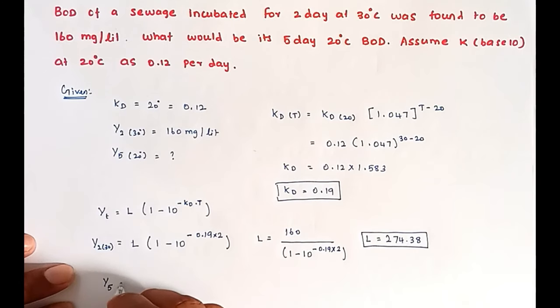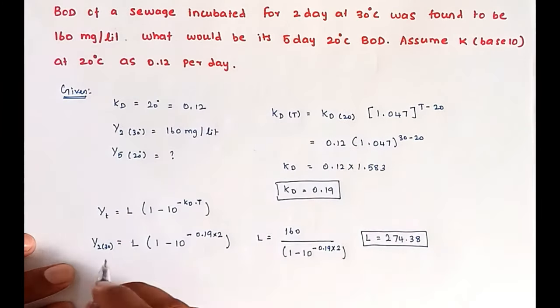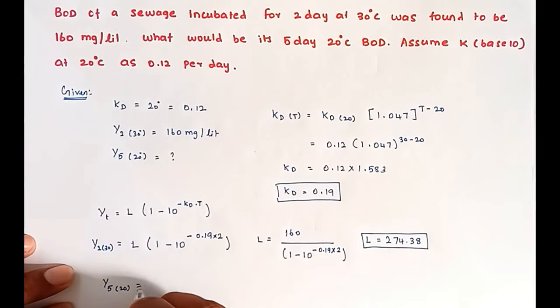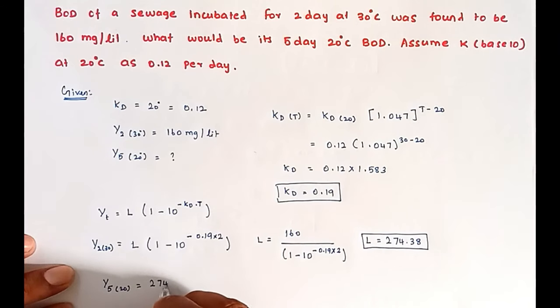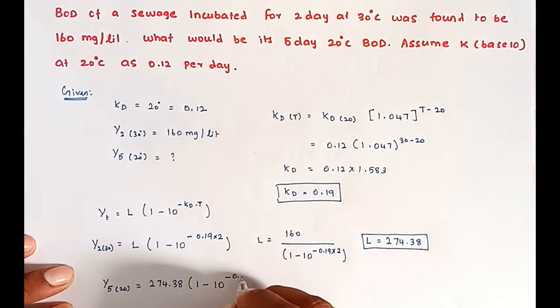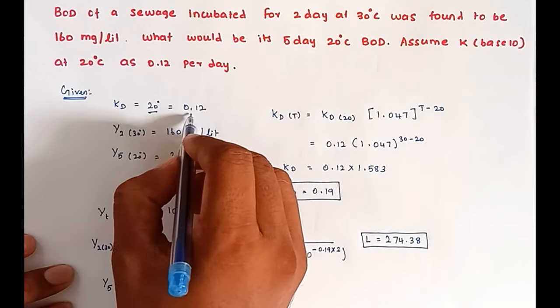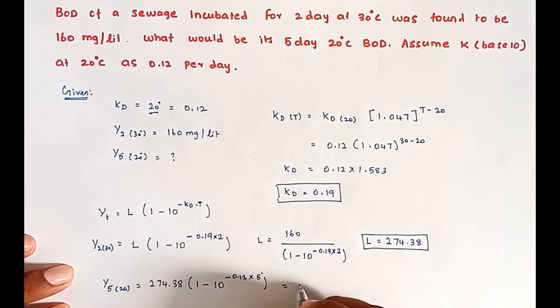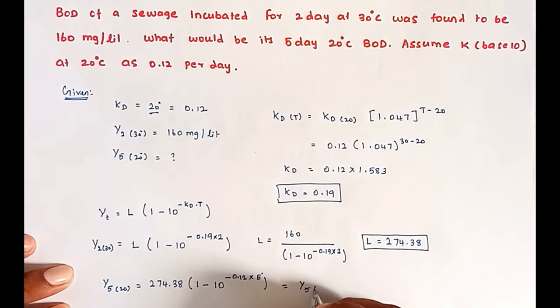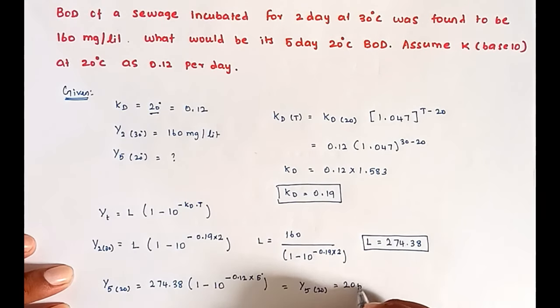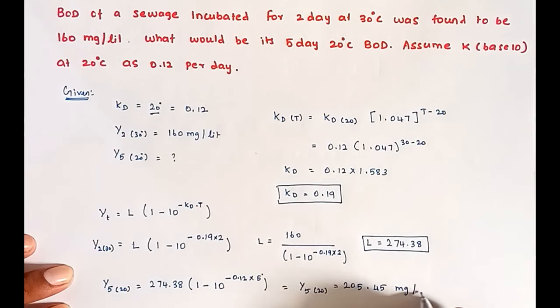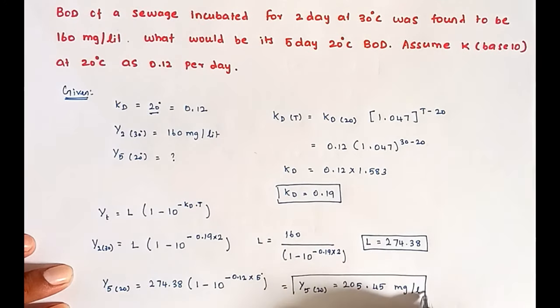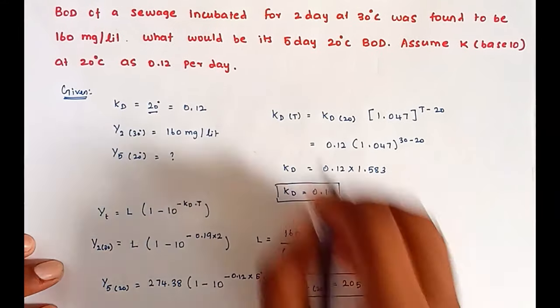Y5 at 20 degree Celsius is equal to L value 274.38 times 1 minus 10 power KD value 0.12, because at 20 degrees KD is equal to 0.12, times T equal to 5. It is 5 days, so T equal to 5. Y5 at 20 degrees is equal to 205.45 milligrams per liter. This is the value of BOD after 5 days at 20 degree Celsius.